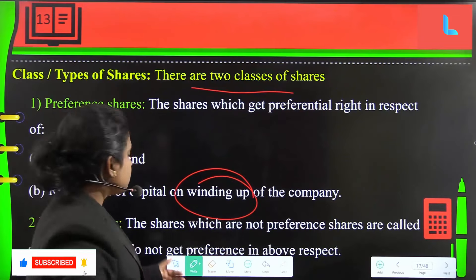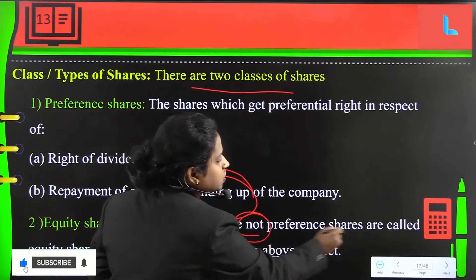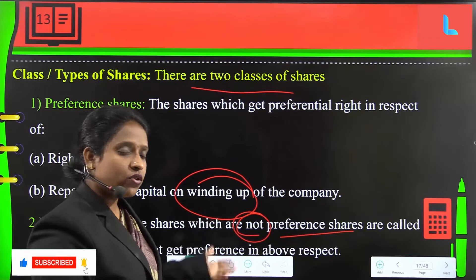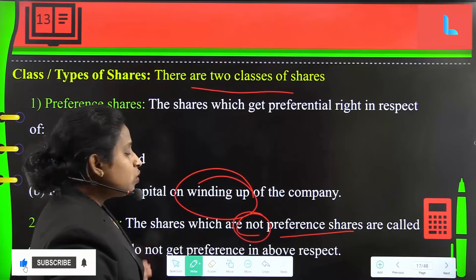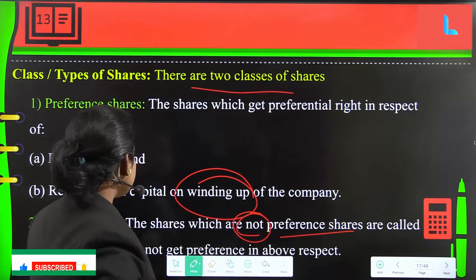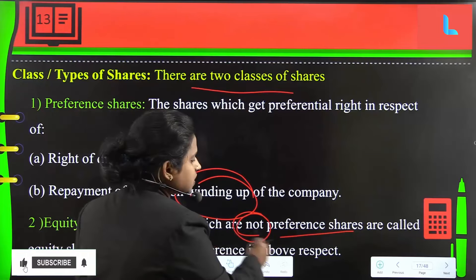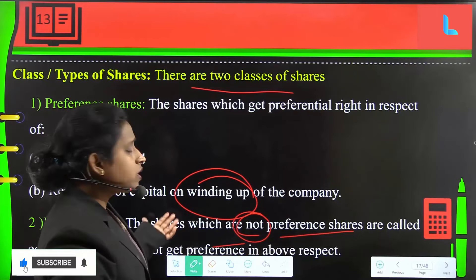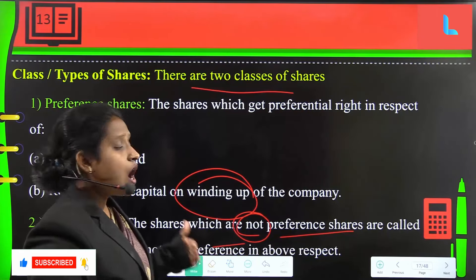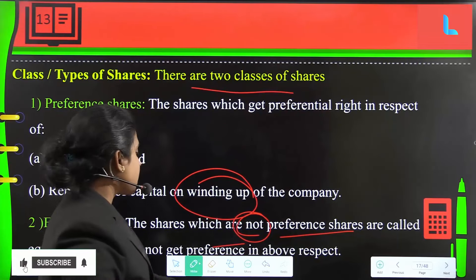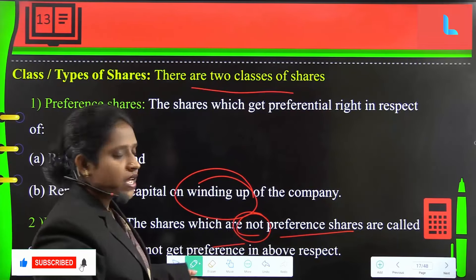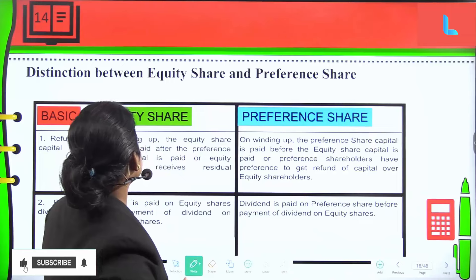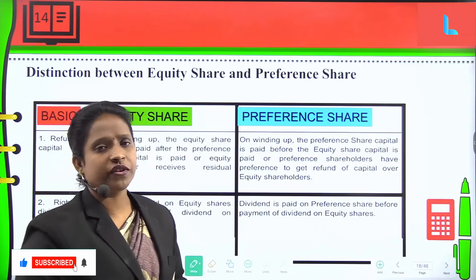Next, equity shares. The shares which are not preference shares are called equity shares. Equity shareholders do not get any preferential rights. They do not get preference in dividend distribution — preference shareholders receive dividend first. Similarly, when the company is closed, preference shareholders are repaid first before equity shareholders.